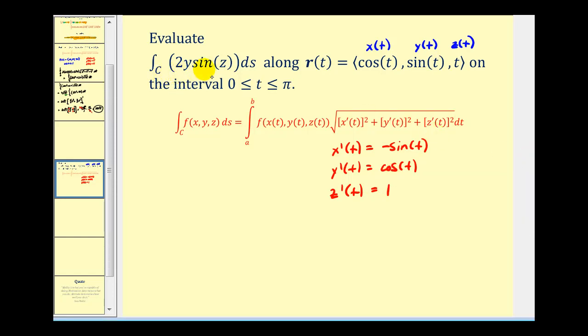So let's go ahead and convert our function to a function of t, and then replace differential s with the magnitude of r prime of t, dt. We know the interval for t is from zero to pi. We have two y times sine z. That's going to be two times sine t. And sine z is equal to sine t, because z is equal to t.